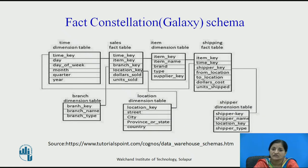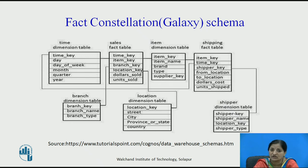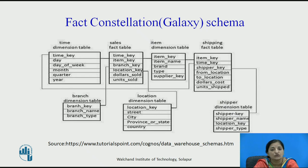The third type of schema is fact constellation, also called galaxy schema. It is a combination of multiple star schemas and uses one or more fact tables. This schema is used for very big enterprises that have multiple business processes to measure. Here we have two fact tables: a sales fact table measuring sales revenue and units sold, and a shipping fact table measuring dollar cost and units shipped. Multiple dimension tables are provided and shared by multiple fact tables. This schema is used for big enterprises.